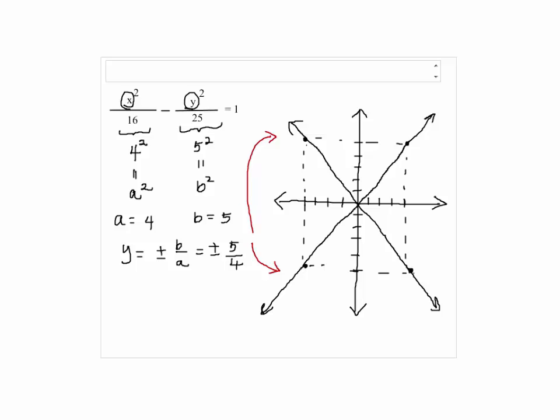Now, since x squared comes first, you know that this graph is going to be a horizontal hyperbola. So we have a horizontal hyperbola.